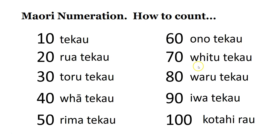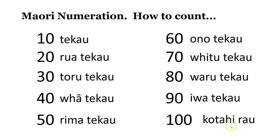Number seventy — fitu te kau. Number eighty — waru te kau. Number ninety — iwa te kau. Number one hundred — kotahi rau. So hundred is rau, and kotahi is talking about one. Kotahi rau.